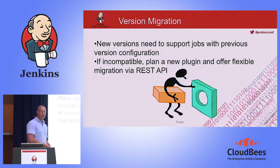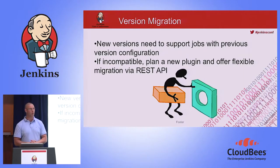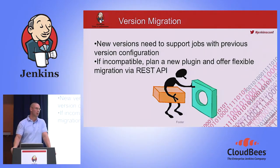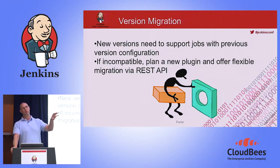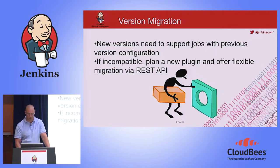Version migration was one of the struggles — we had several versions floating around and the data was not always compatible. One trick we used was to make a REST API so our plugin could handle REST API calls, allowing you to grab data from your previous version and create new jobs in the new version. It's not a perfect upgrade path, but it worked for us in practice.